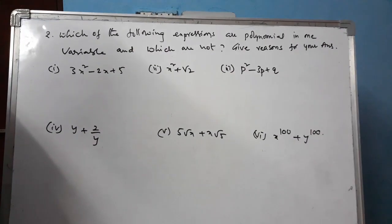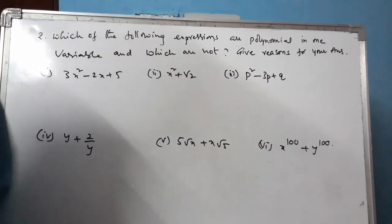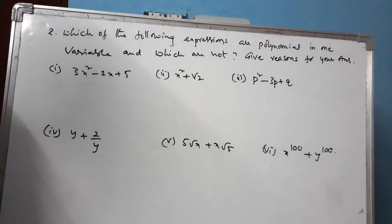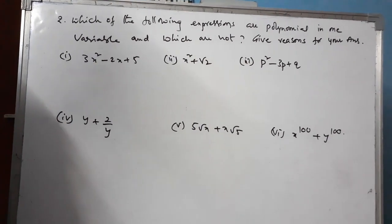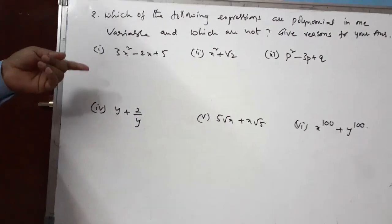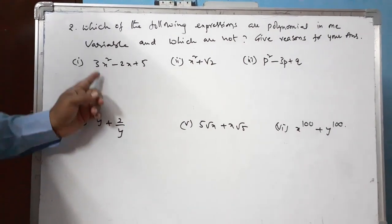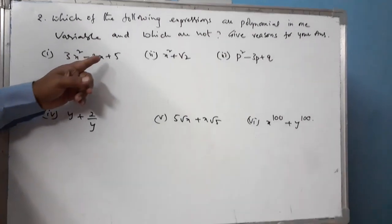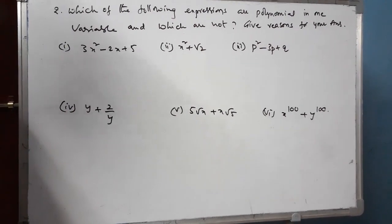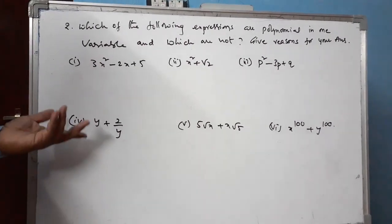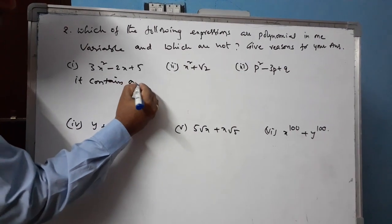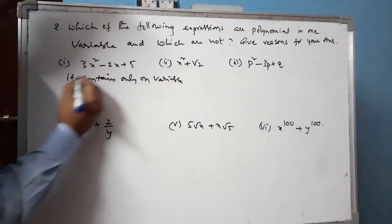The second problem: which of the following expressions are polynomials in one variable and which are not? A polynomial in one variable must first be a polynomial and must contain only one variable. First expression: 3x squared minus 2x plus 5. The coefficients 3, 2, 5 are real numbers, the powers are non-negative integers, and it contains only one variable x. So it is a polynomial in one variable.